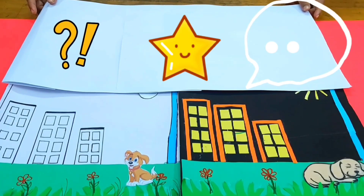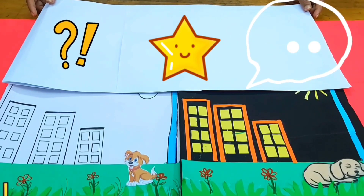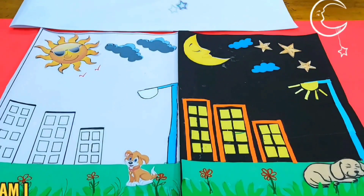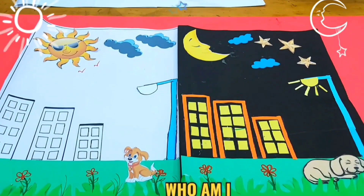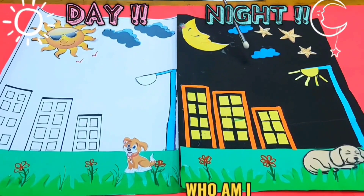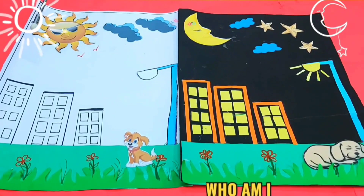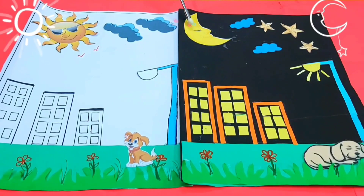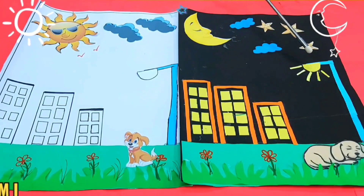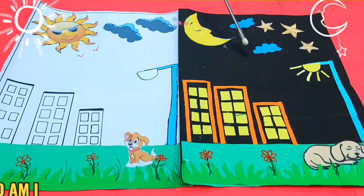Toh chaliye main poori picture aapko dikhati hoon aur curtain hatati hoon. 3, 2, 1. Yeh dekhiye, samajh gaye the na — that main hoon day aur yeh keh rahe hain main hoon night. Day mein bright sun hai, birds are flying and it is brightness everywhere. Night mein moon is there in the sky, stars are shining bright and the light lamp is also glowing. So in 'Who am I', this is day and this is night.